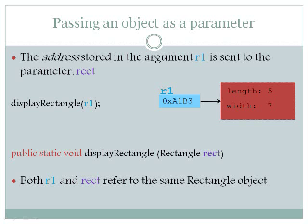Passing an object as a parameter. The address stored in the argument R1 is sent to the parameter rect. R1 is passed to the method displayRectangle, which is written below. As you can see, displayRectangle takes a rectangle object rect.